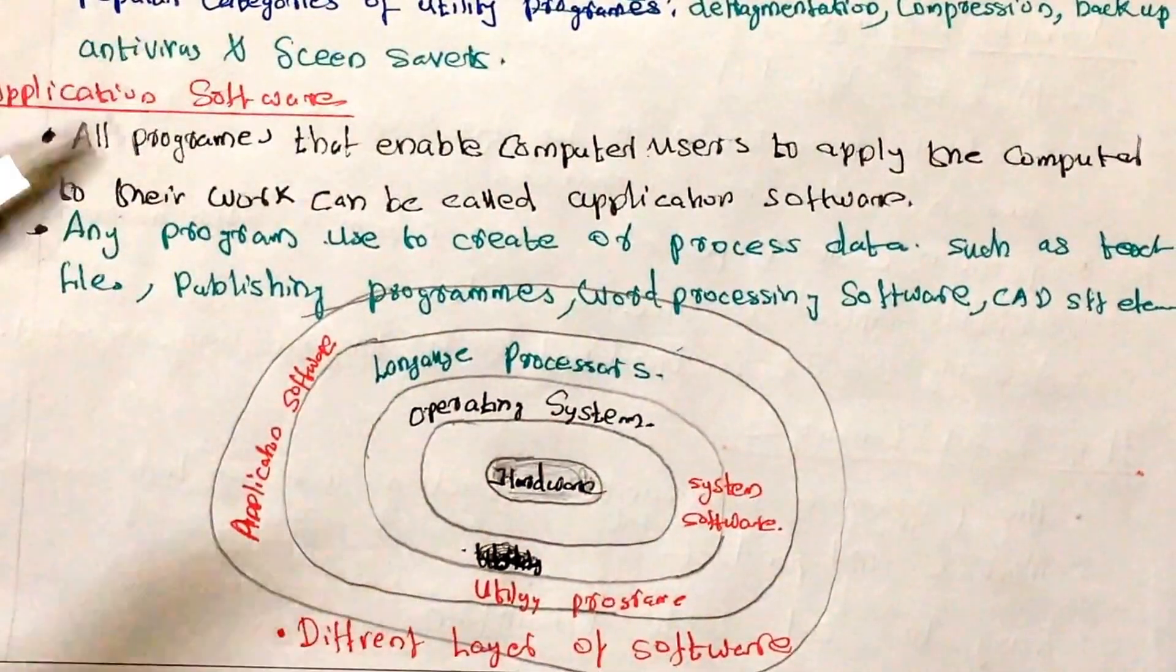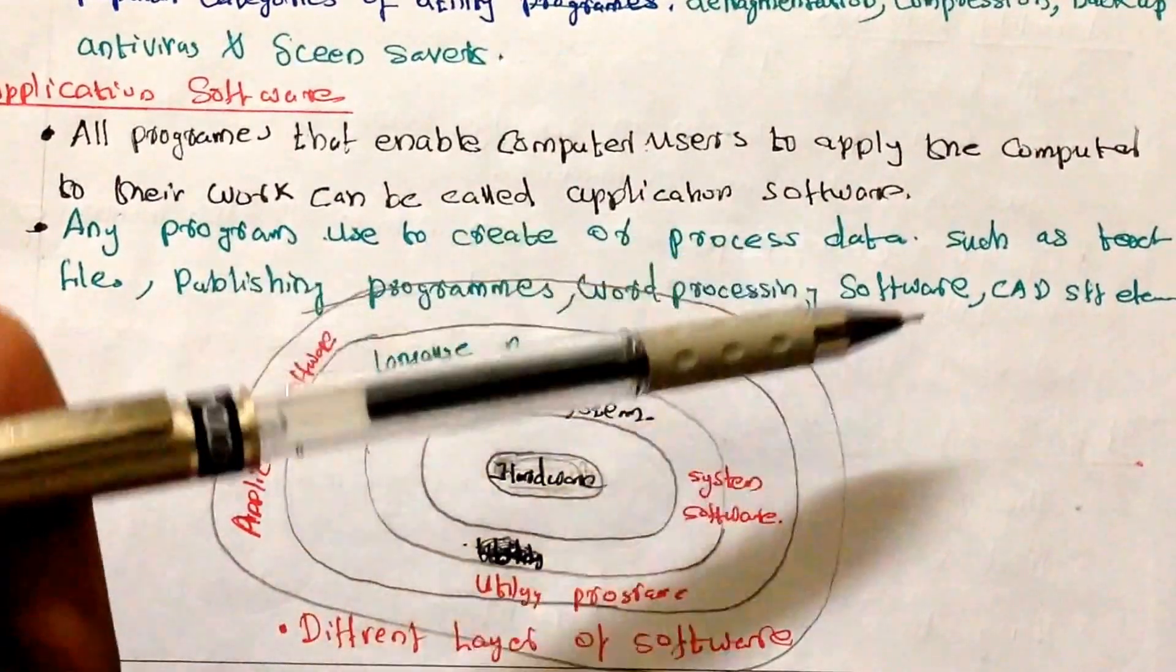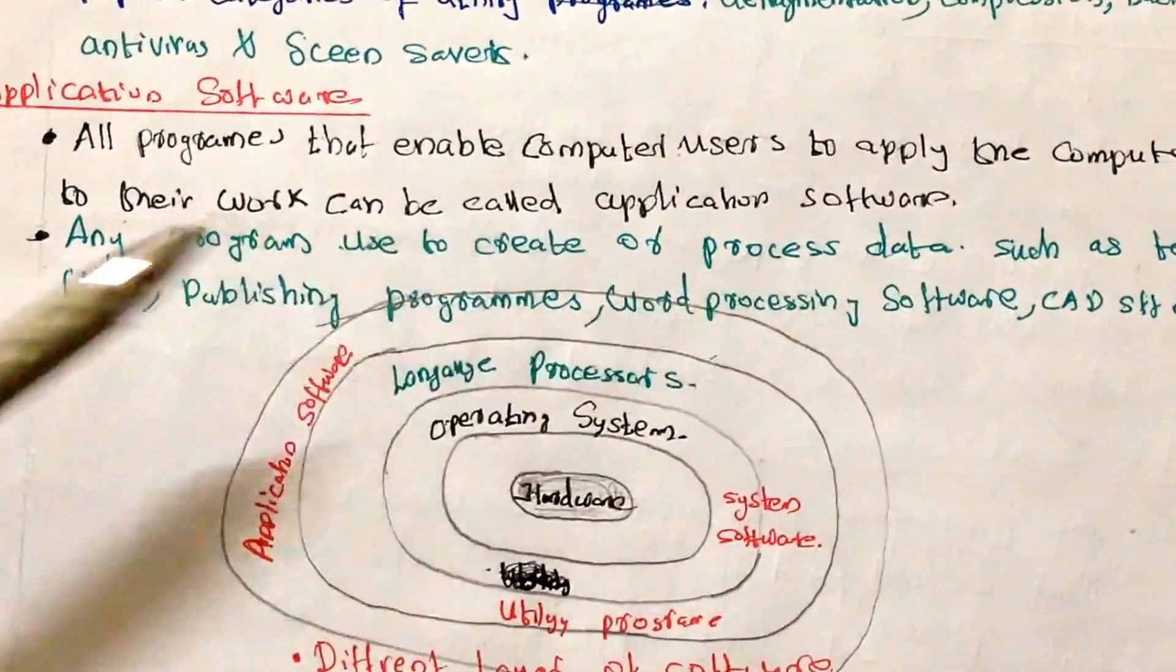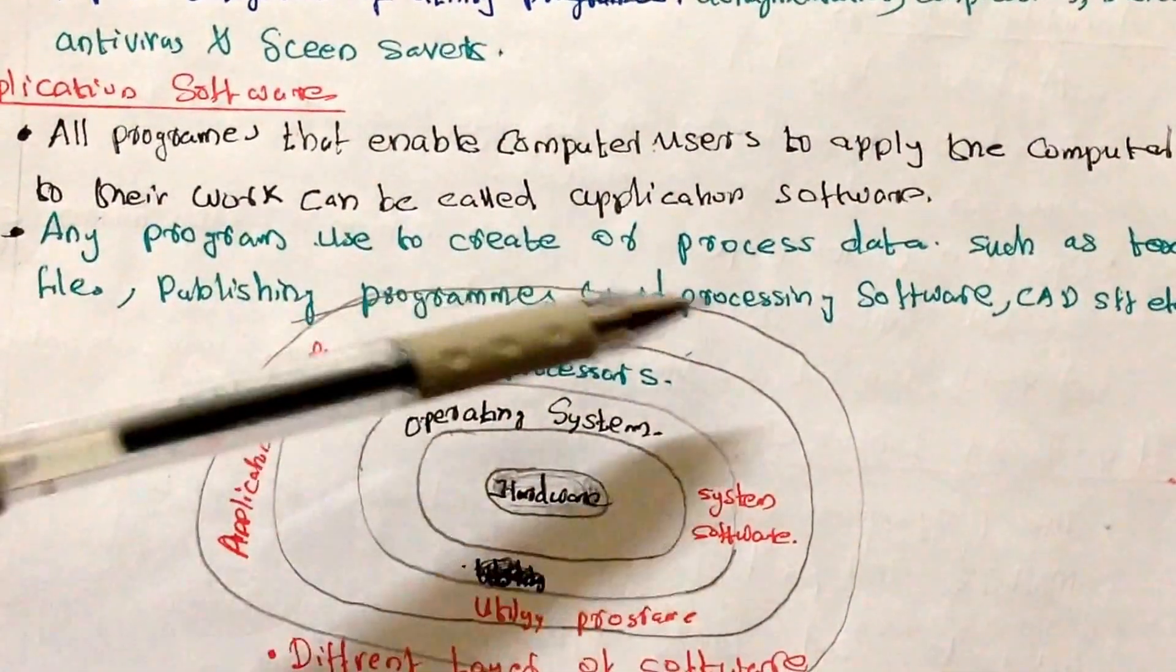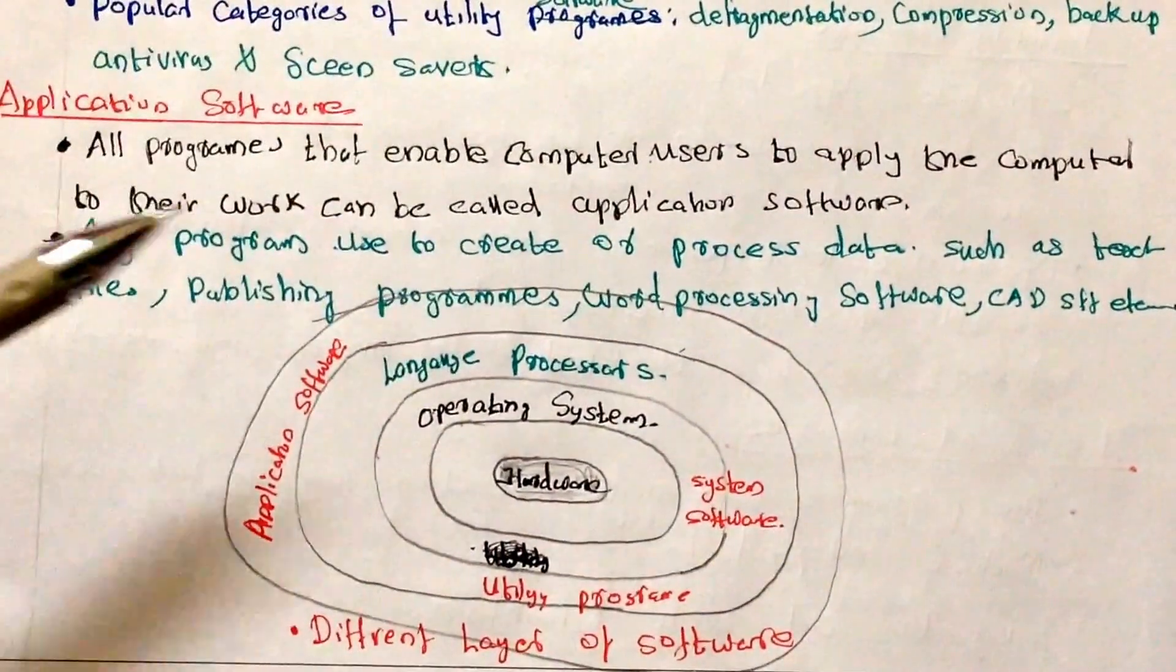Whatever program written used to create or process data is also application software, such as file publishing programs, word processing software, CAD software etc. are come under this category.